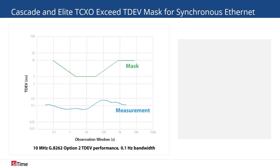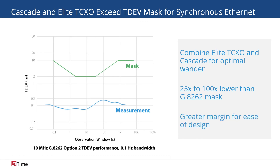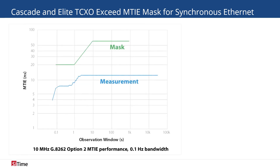Minimizing the wander of clock outputs is critical for network synchronization. Together, the stability of the Elite TC-XO and programmable bandwidth loop of the Cascade Network Synchronizer outperform the time deviation set by ITU-T standard G.8262. The combination of our devices leads to time deviation between 25 and 100 times better than what the standard requires for synchronous Ethernet. This wide margin makes designing the system easier as the requirements for other components in the system can be relaxed. The second important spec when designing for low wander is the mean time interval error, also known as MTIE. The MTIE of the Elite Super TC-XO paired with the Cascade Network Synchronizer is up to 5 times lower than the mask set by ITU-T G.8262.